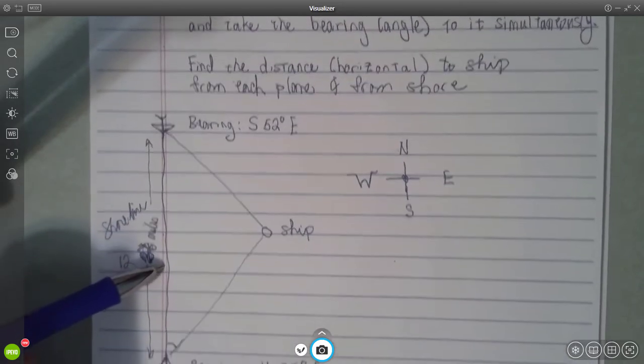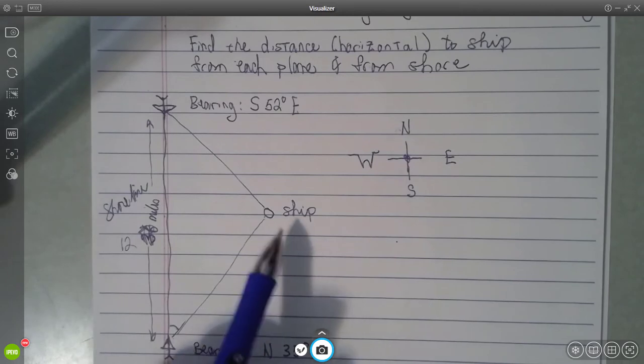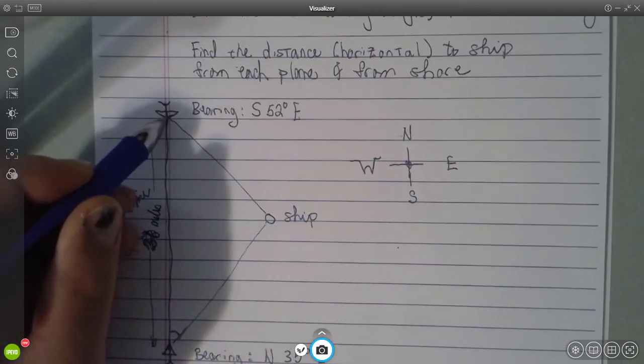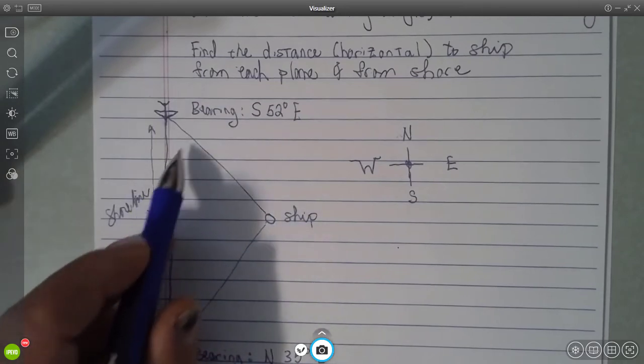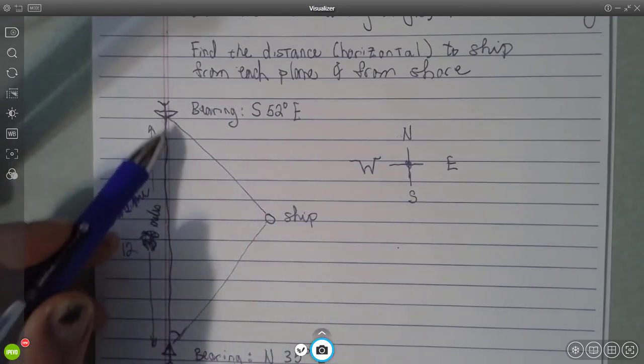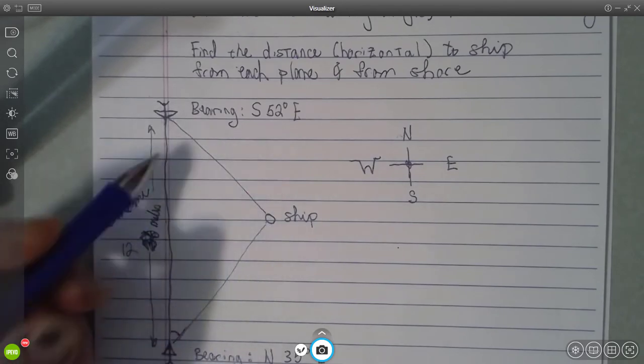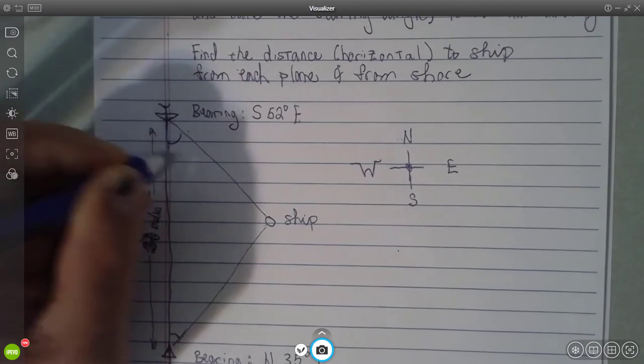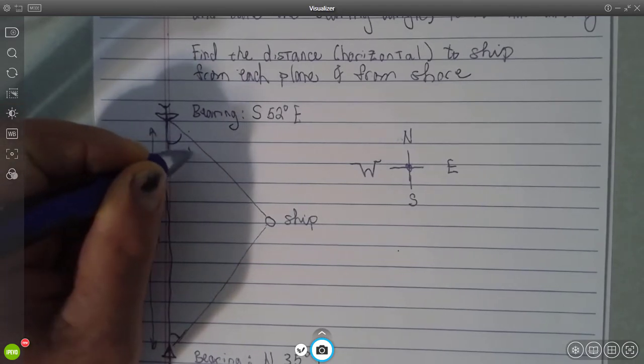And at the same point in time, they pick up a signal from a ship that's in distress. And so this plane computes the bearing, the direction you have to fly in to get to that ship, and finds that to be south, rotate 52 degrees to the east.